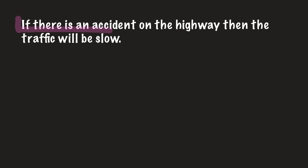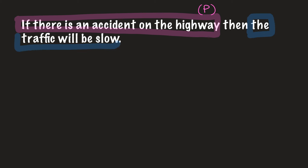Let's separate it into P and Q — two propositions or statements. The first statement, after the 'if', is: there is an accident on the highway — that is our P. The second one, after the 'then', is: the traffic will be slow — that is our Q. So we have our if P then Q. Now, the inverse is not P and not Q but the order remains the same: if not P then not Q.